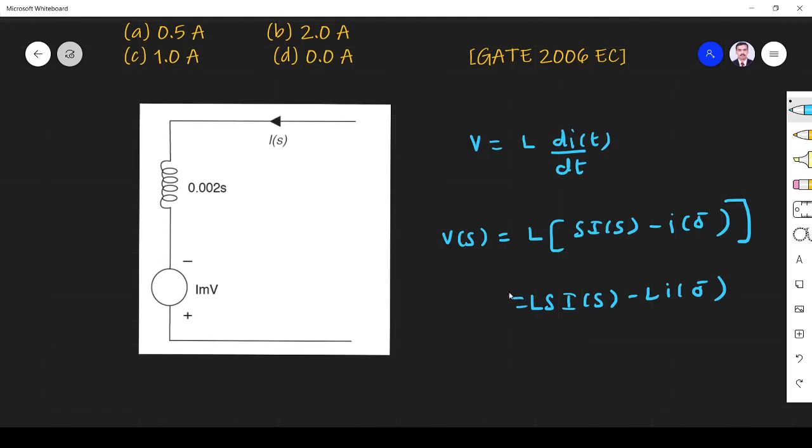So that is what they have given. You see L into S I of S, that is what voltage that they have given: 0.02. So from the diagram we assume that it is initial value. So this indicates minus L I of 0 is equal to initial. This is what initial condition we have.